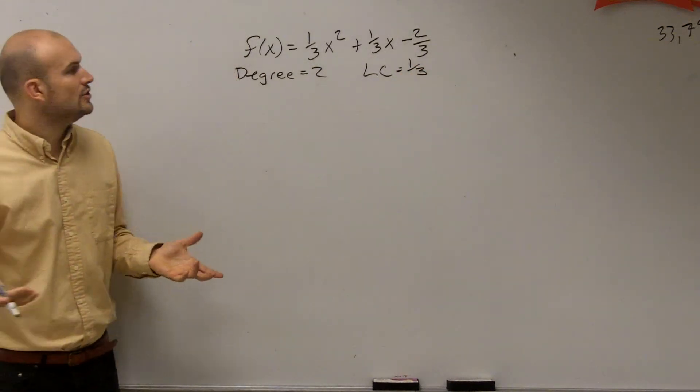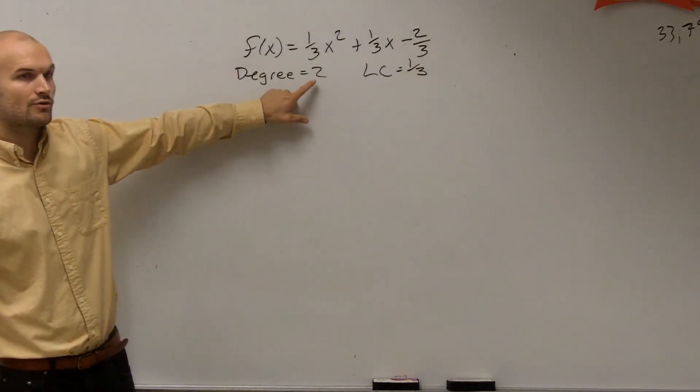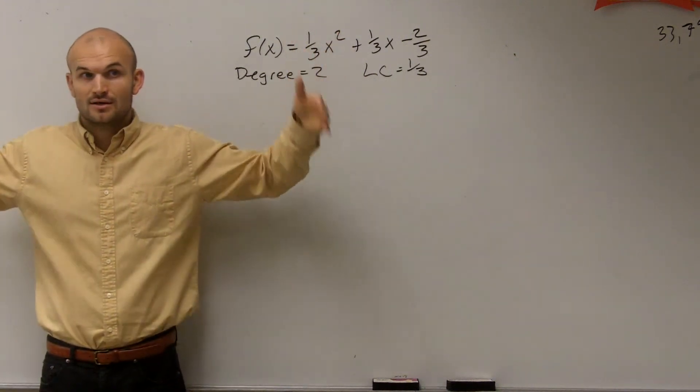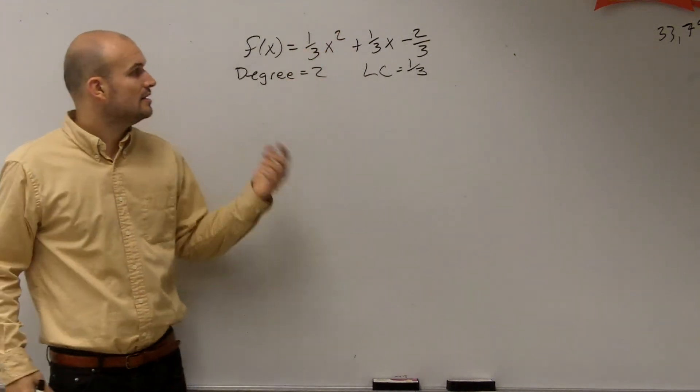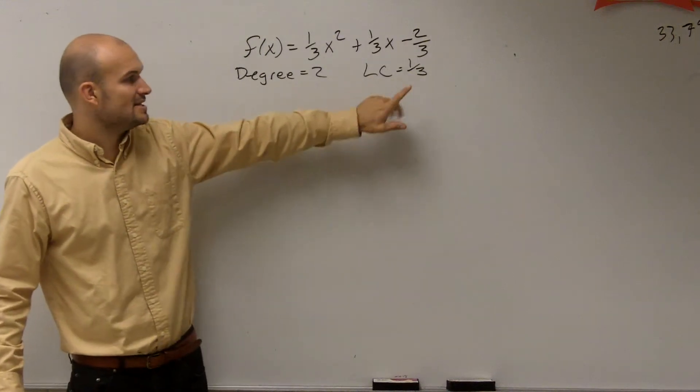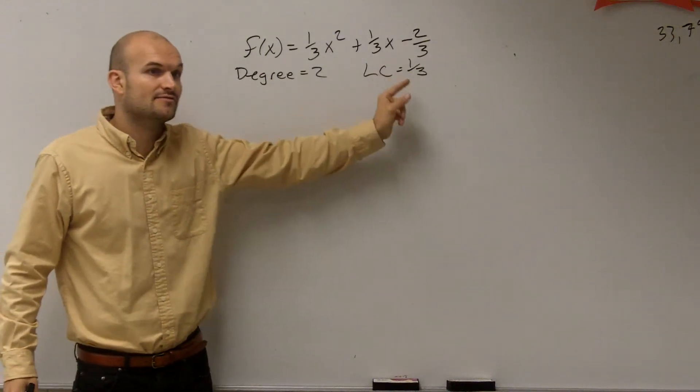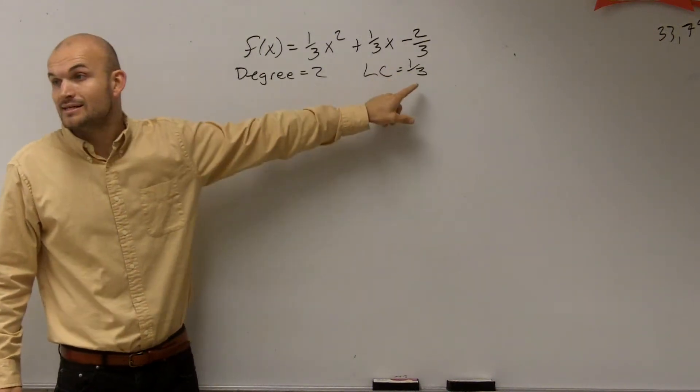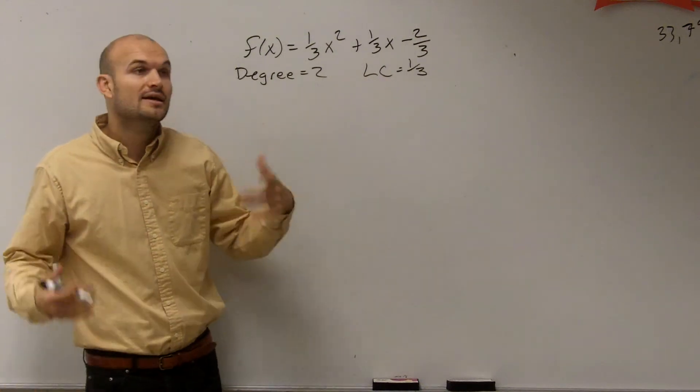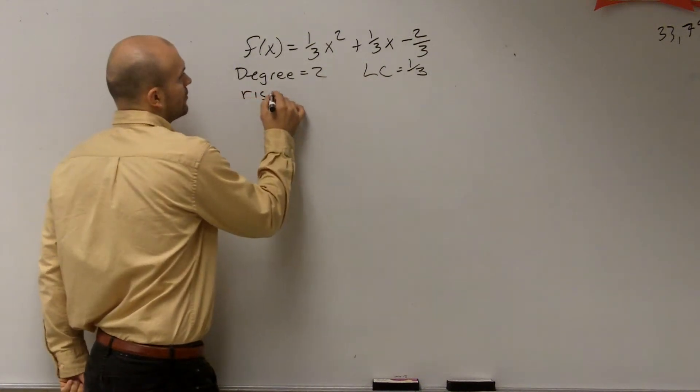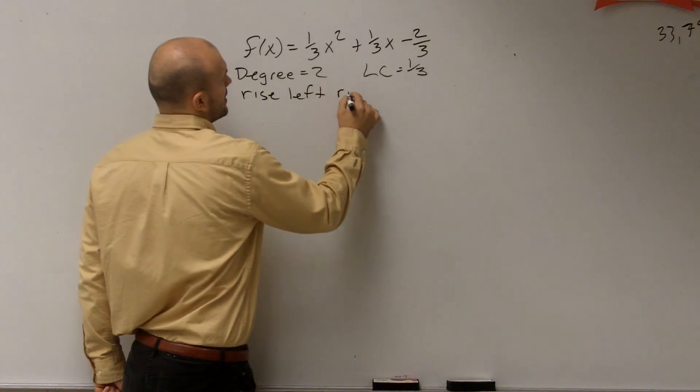So if you guys remember in your notes, we talked about when you have an even degree, it's either going to rise left, rise right, or fall left, and fall right. And that all depends on if your leading coefficient is positive or negative. It's positive, so by the leading coefficient test, it's going to rise left and rise right.